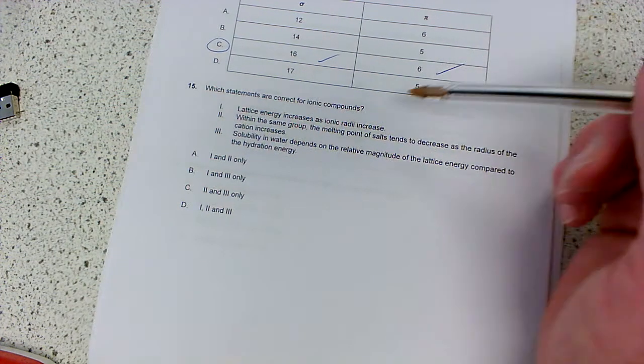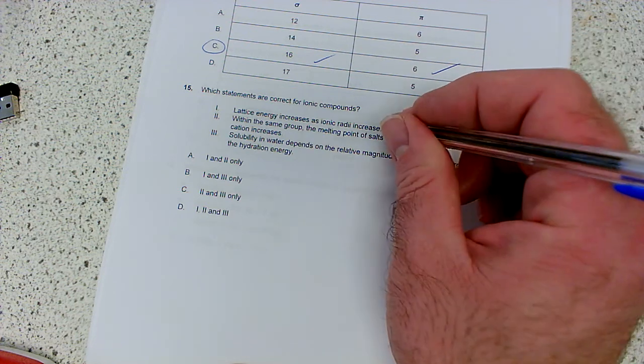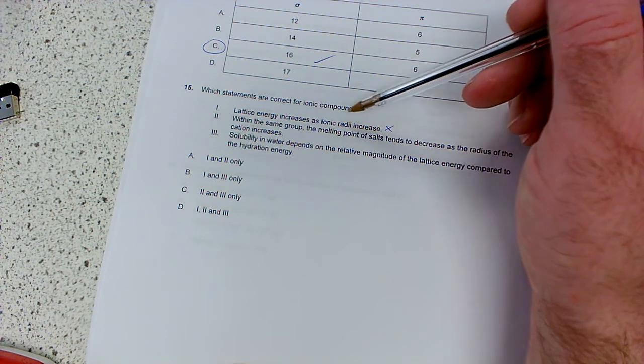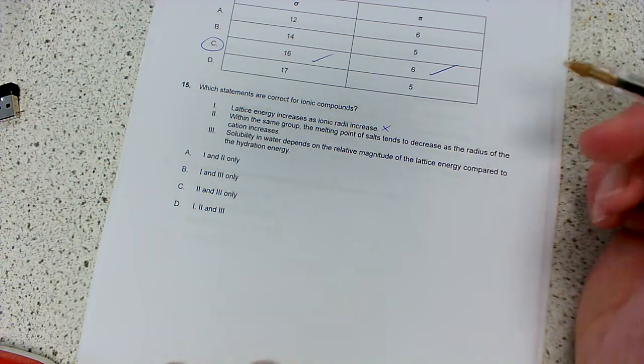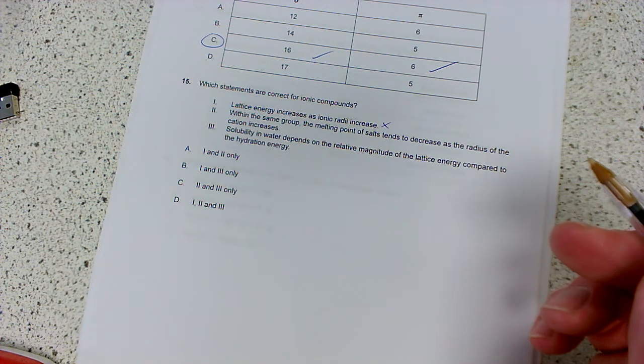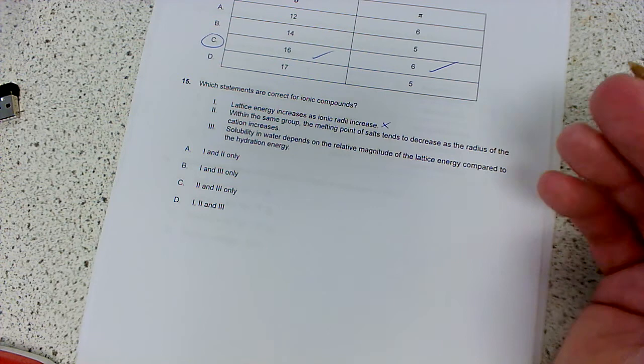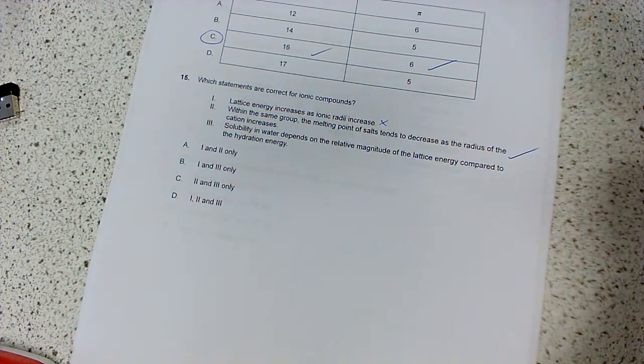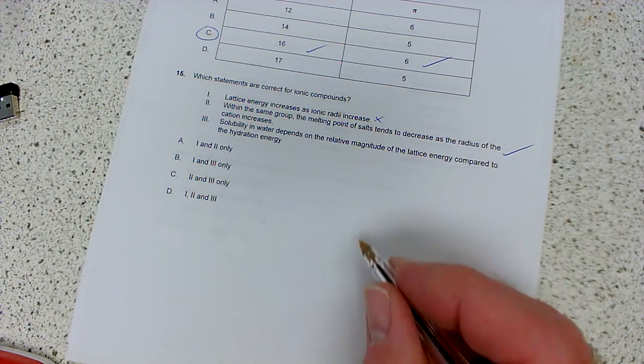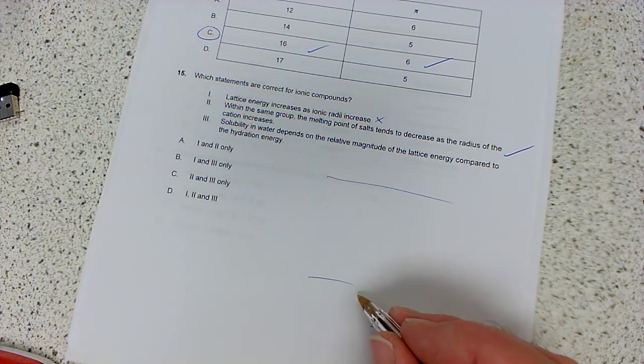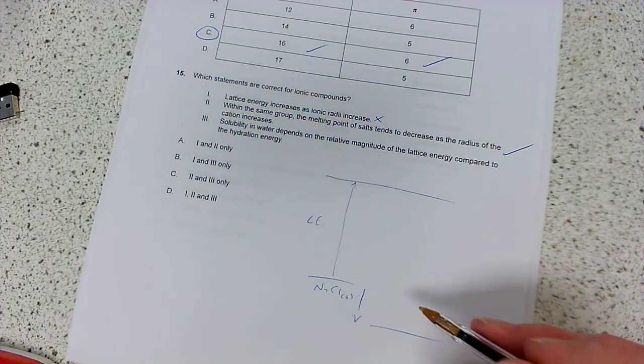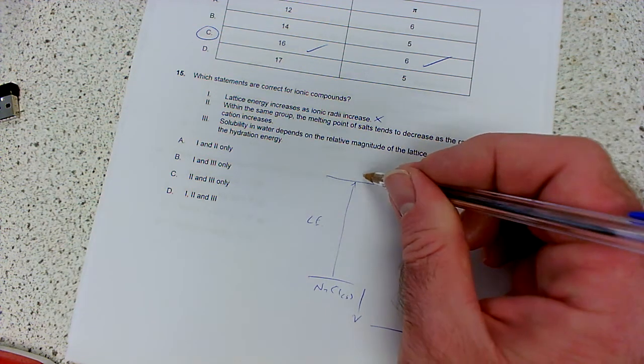Question 15: which statements are correct for ionic compounds? Lattice energy - a larger ion will have weaker ionic bonds and therefore smaller lattice energy. Within the same group, the melting points of salts tends to decrease as the radius of the cations increases. Yes, that's right - as the ions get bigger, the ionic bonds become weaker, so melting points decrease. I agree with that one.